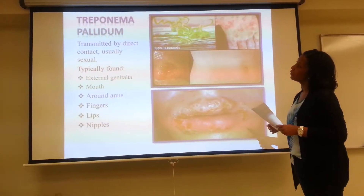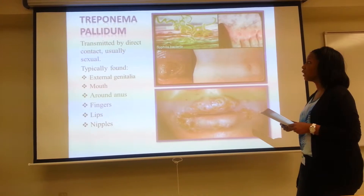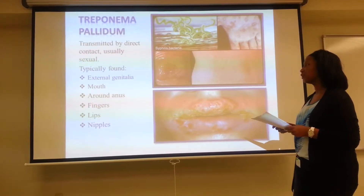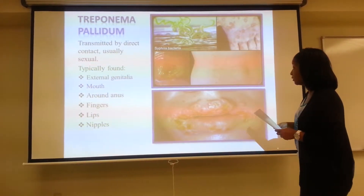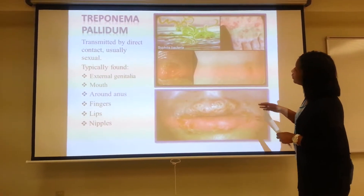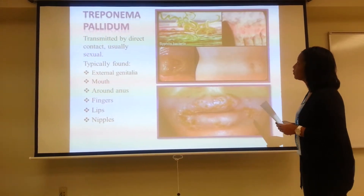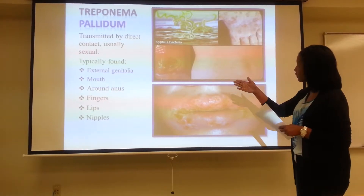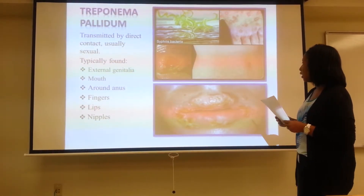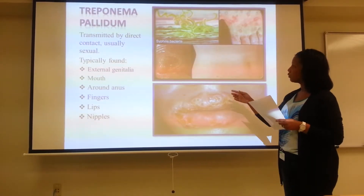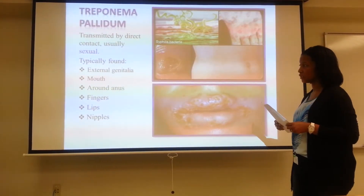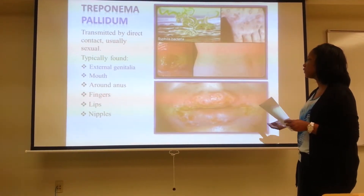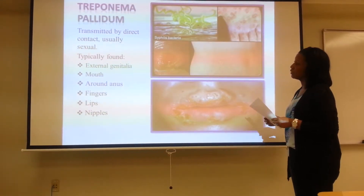Further discussion of Treponema pallidum, the type that causes syphilis: it's transmitted by direct contact, usually sexual contact. Here is a picture of the bacteria — spiral-shaped. There are pictures of syphilis lesions on the hand, on the skin, and on the mouth and lips. It is typically found at the external genitalia, on the mouth, around the anus, on the fingers, on the lips, and on the nipples.